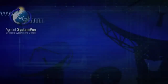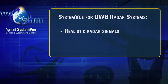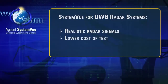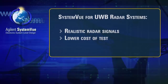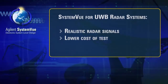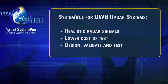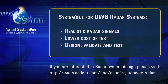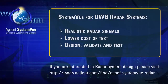We have shown how Agilent SystemVue, along with Agilent test equipment, is used to generate realistic UWB signals. This dramatically lowers the cost of testing radar systems and allows you to test at your convenience. SystemVue is a powerful system-level design tool that takes you from design through validation and test of communications and defense systems. If you are interested in radar system design, please visit www.agilent.com.